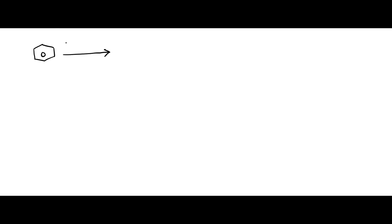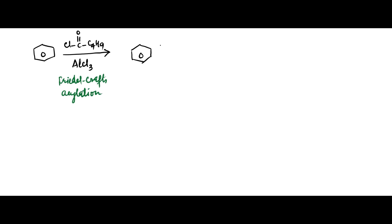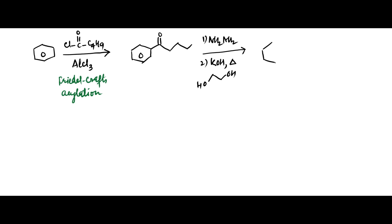An alternate way to synthesize N-pentyl benzene is by treating benzene with N-butyryl chloride in the presence of AlCl3 — that is, Friedel-Crafts acylation — to form N-butylphenyl ketone. This can then be subjected to Wolf-Kishner reduction to convert the carbonyl into a methylene group with loss of N2 gas, thus synthesizing N-pentyl benzene.